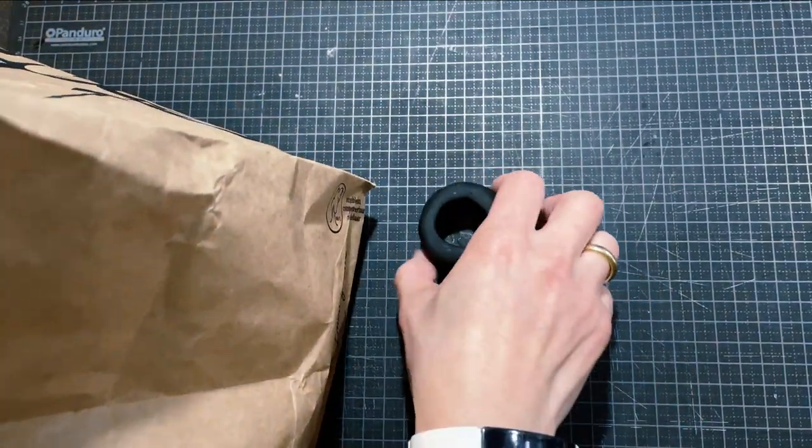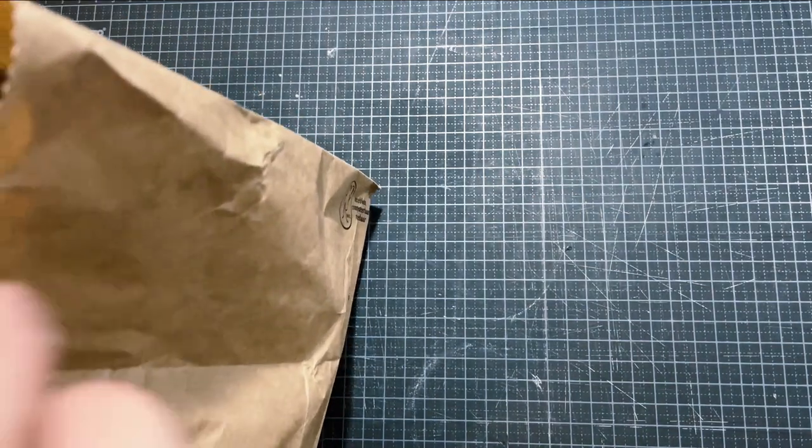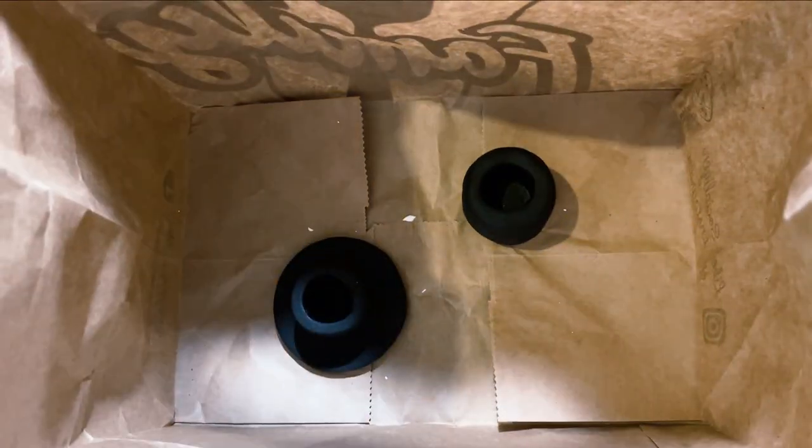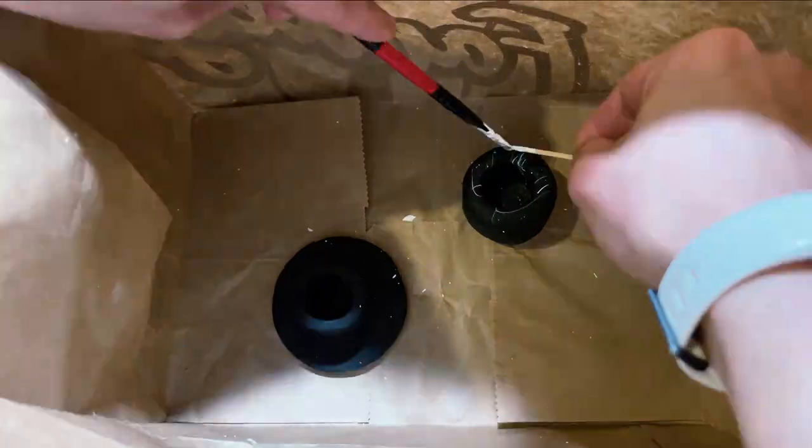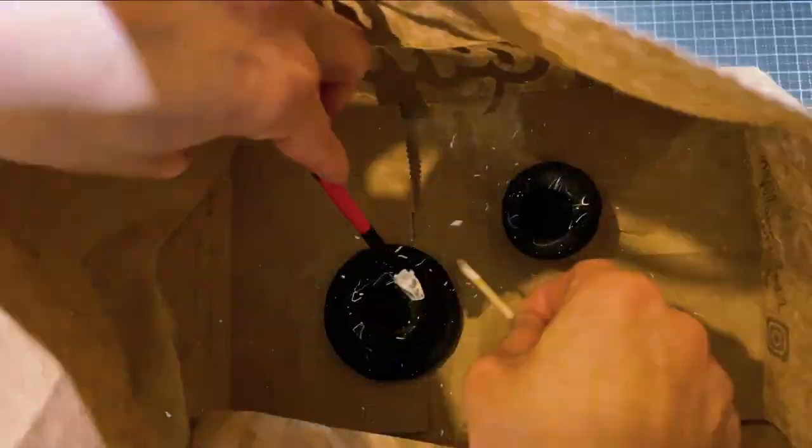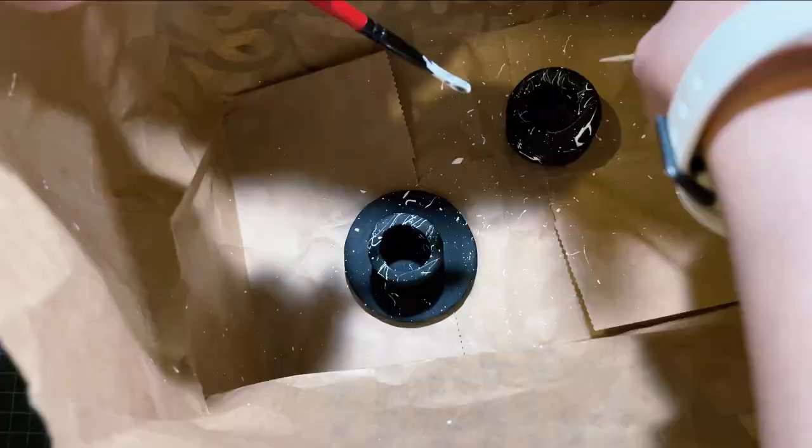Because it is going to be messy, I will put them in a paper bag. Use a toothpick to splash paint over the holders. This way makes the white marks naturally all over the candle holders.